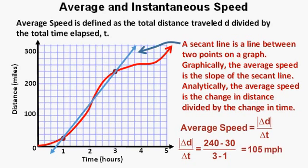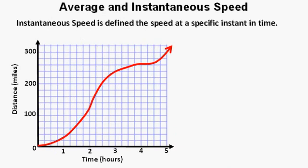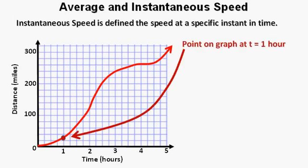Now we'll take a look at instantaneous speed. Instantaneous speed is the speed at a specific instant in time. Let's evaluate the speed at one second. Here's a point on the graph at one second.